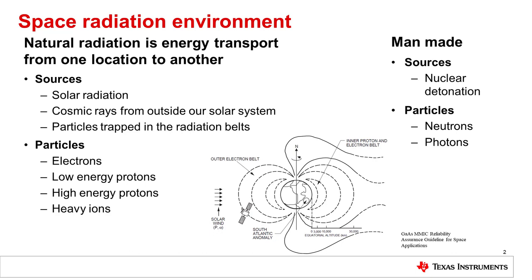The particles of interest from the natural environment are electrons, protons, and heavy ions. An example of a man-made source is a nuclear detonation, and the particles of interest are neutrons and photons.